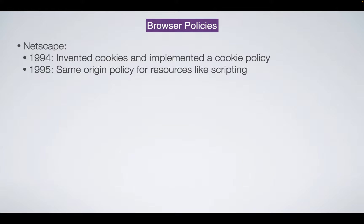For cookies, origin means which site gave you the cookie — that's an important component in deciding whether to send it. The same origin policy applies the same idea but to what we call active resources, mainly JavaScript. If you pull in libraries from different places into your website, how do they all work together? Can the libraries see each other, see the website's data, interact with it? We need policies for that.